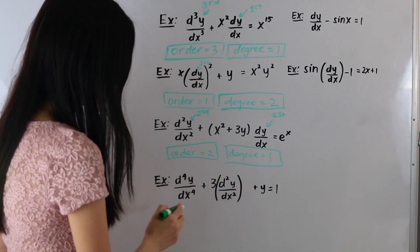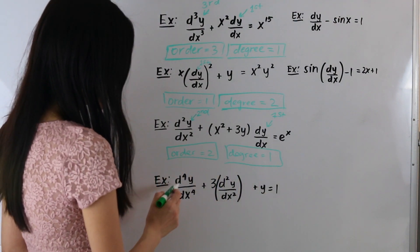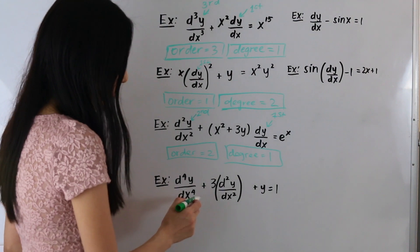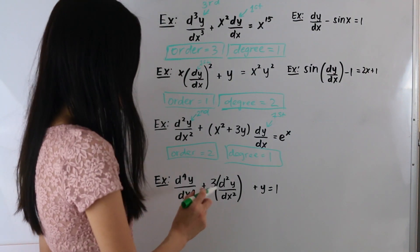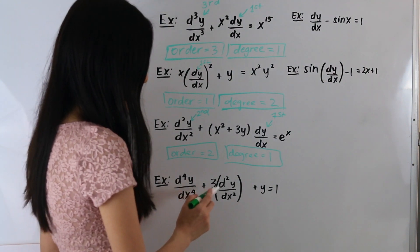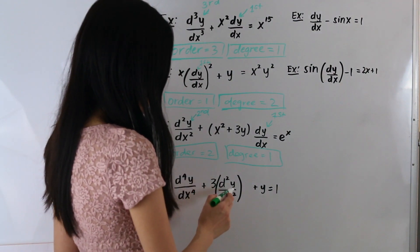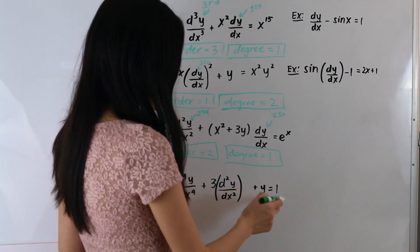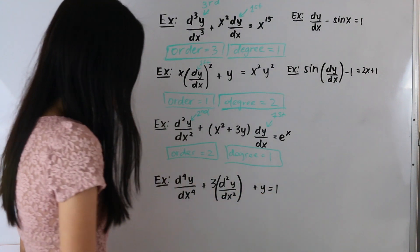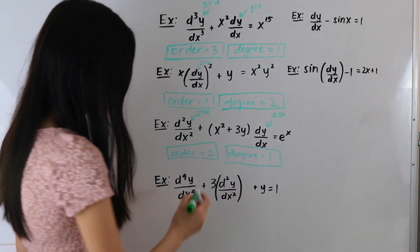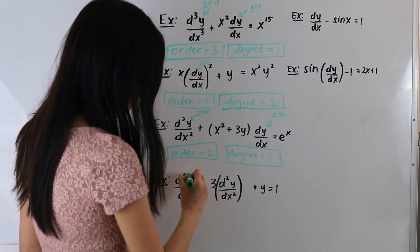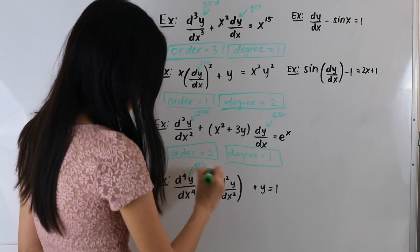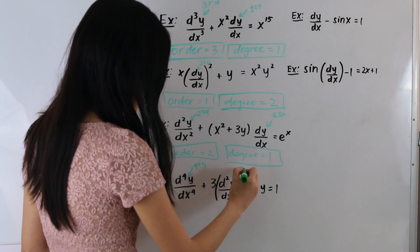In this next example, we have d to the fourth y over dx to the fourth plus 3 times d squared y over dx squared plus y, equal to 1. Let's label our derivatives. This is a fourth order derivative and this is a second order derivative.